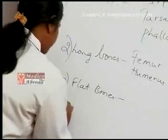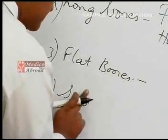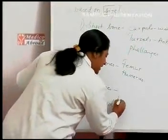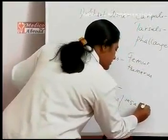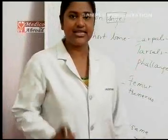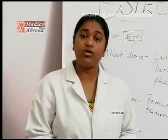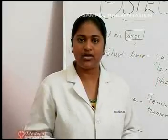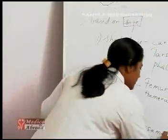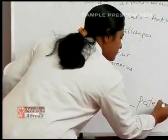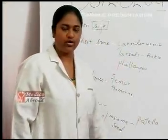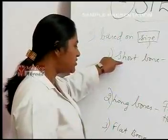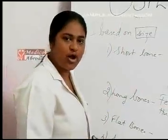The last category is the sesamoid bone — a bone shaped like a sesame seed. The most important example is the bone in your knee cap, called the patella. That is the most important sesamoid bone. So, classifying bones based on size, you have short bones, long bones, flat bones, and sesamoid bones.